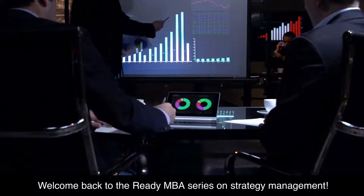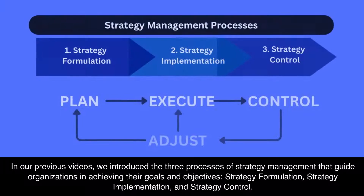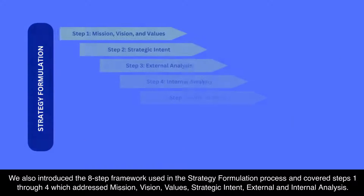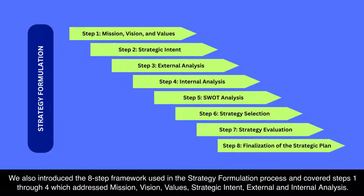Welcome back to the Ready MBA series on strategy management. In our previous videos, we introduced the three processes of strategy management that guide organizations in achieving their goals and objectives: strategy formulation, strategy implementation, and strategy control. We also introduced the eight-step framework used in the strategy formulation process and covered steps 1 through 4, which addressed mission, vision, values, strategic intent, and external and internal analysis.